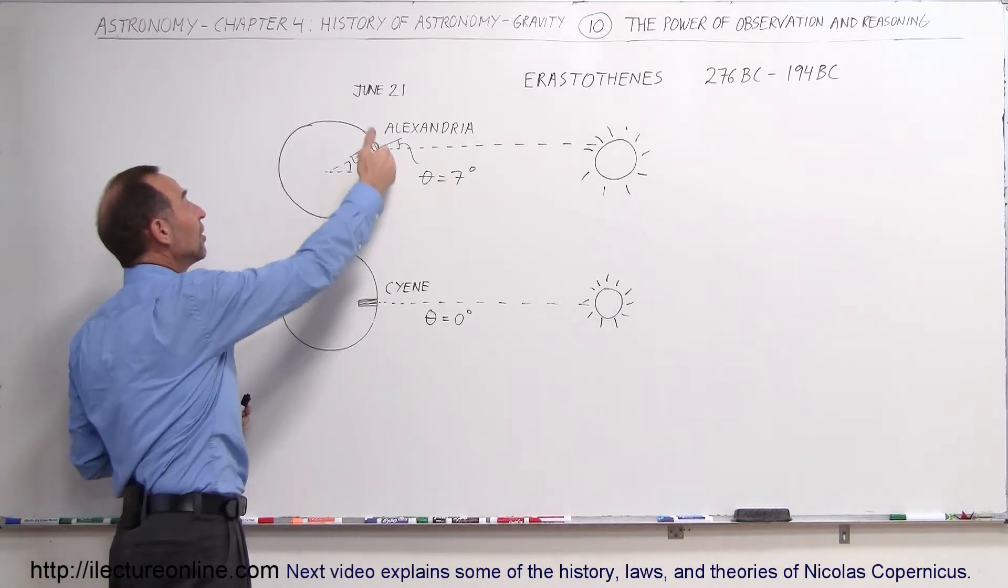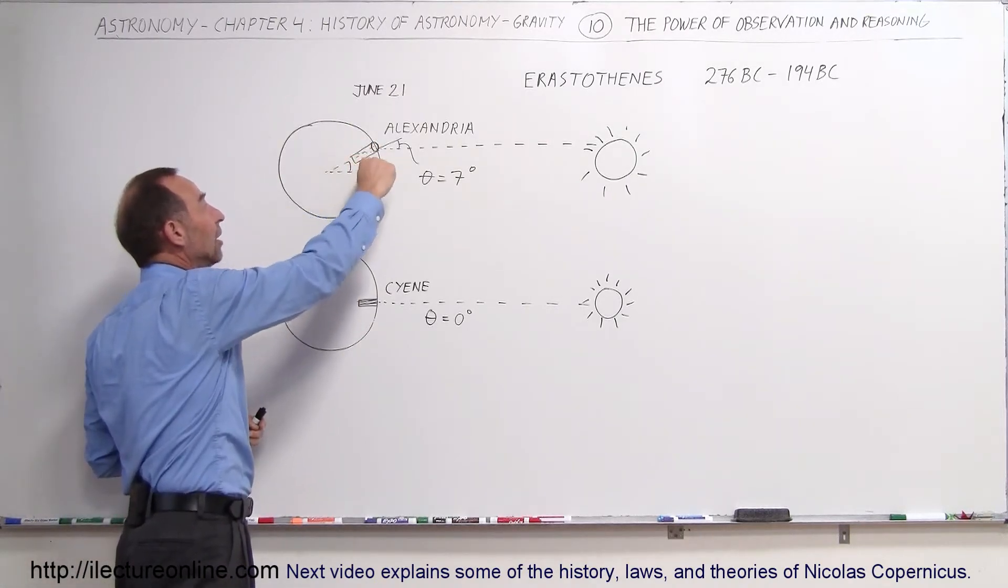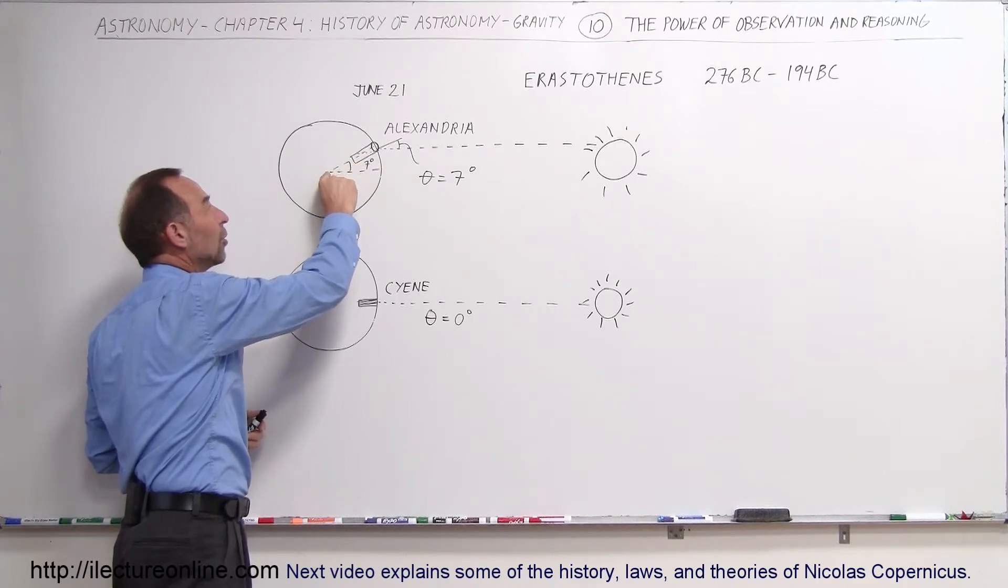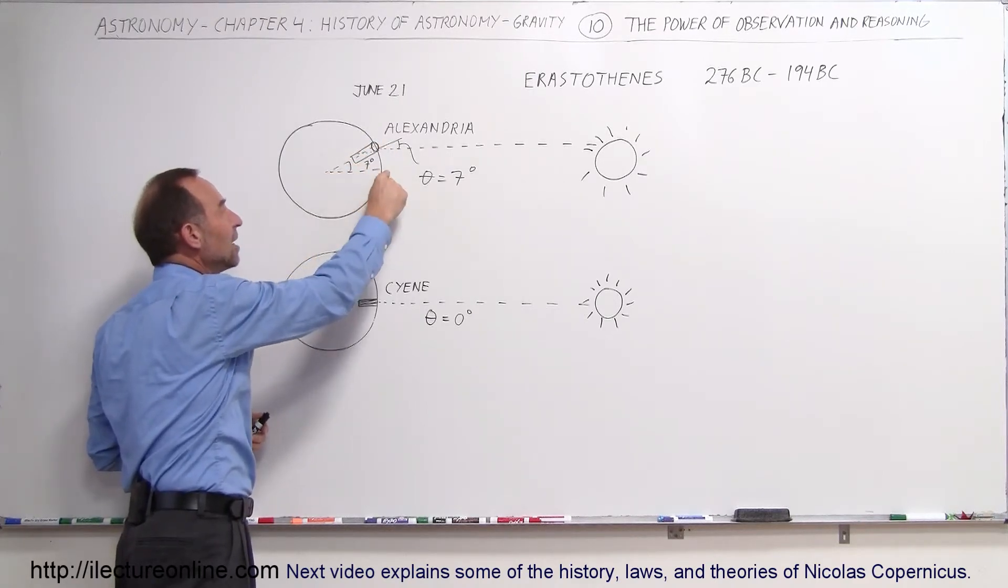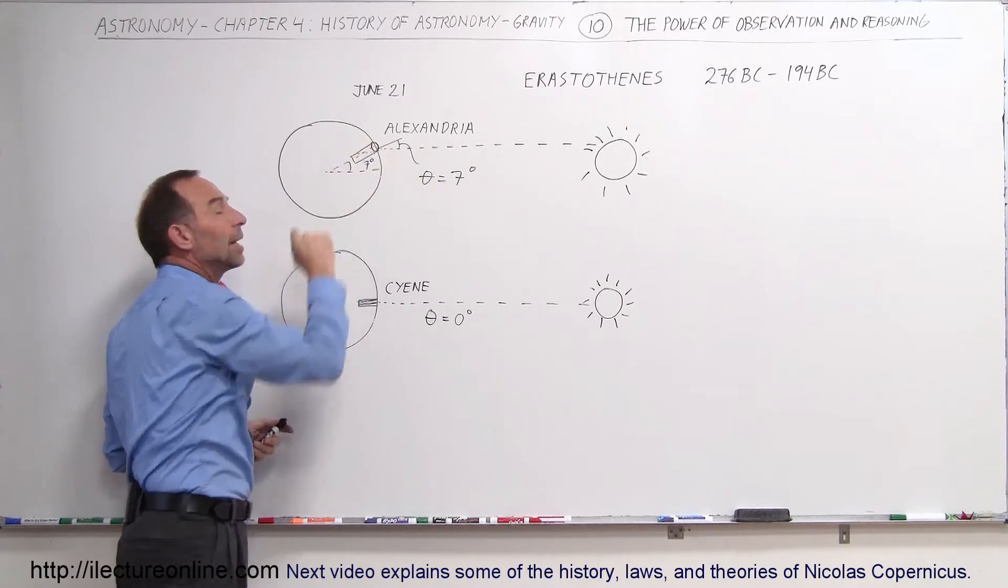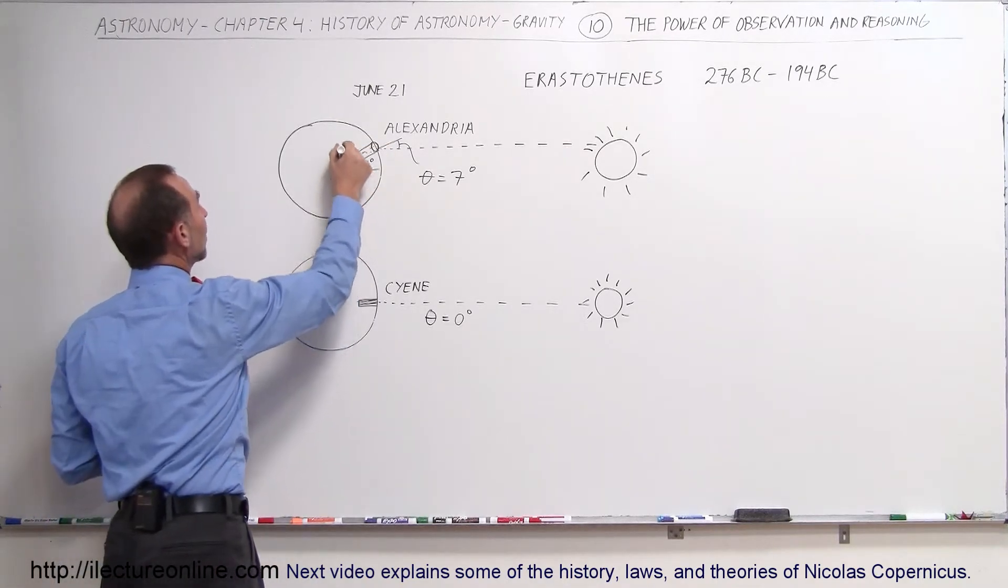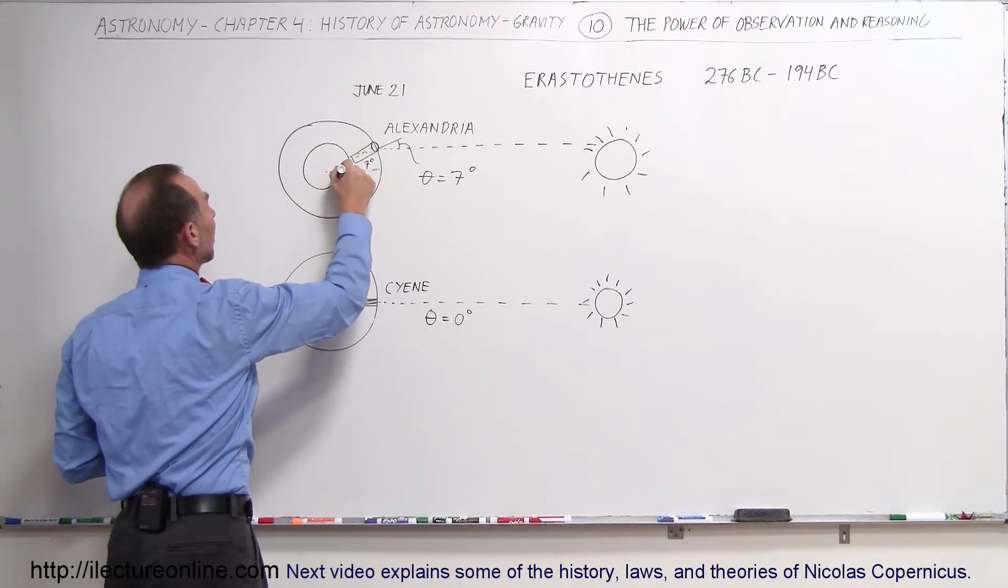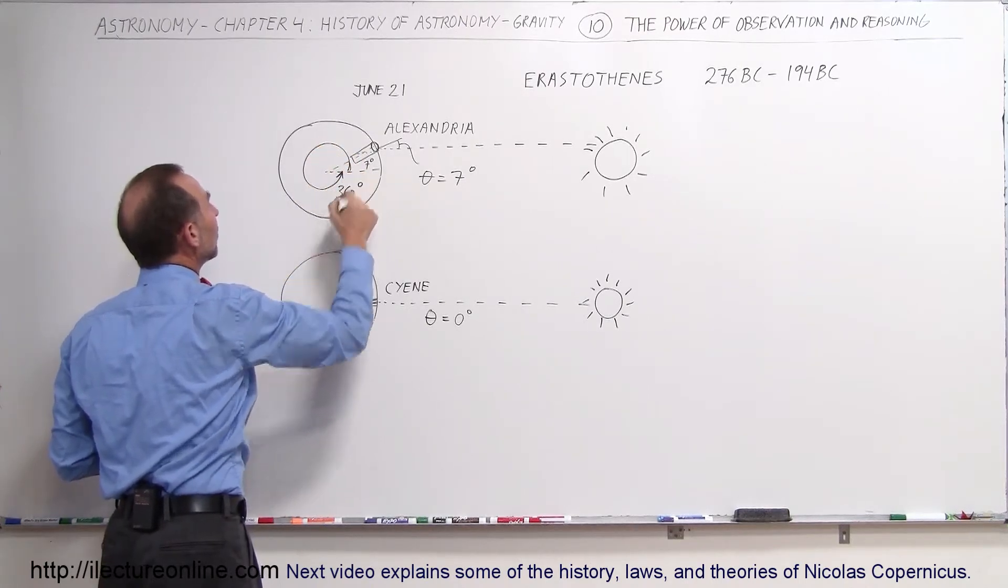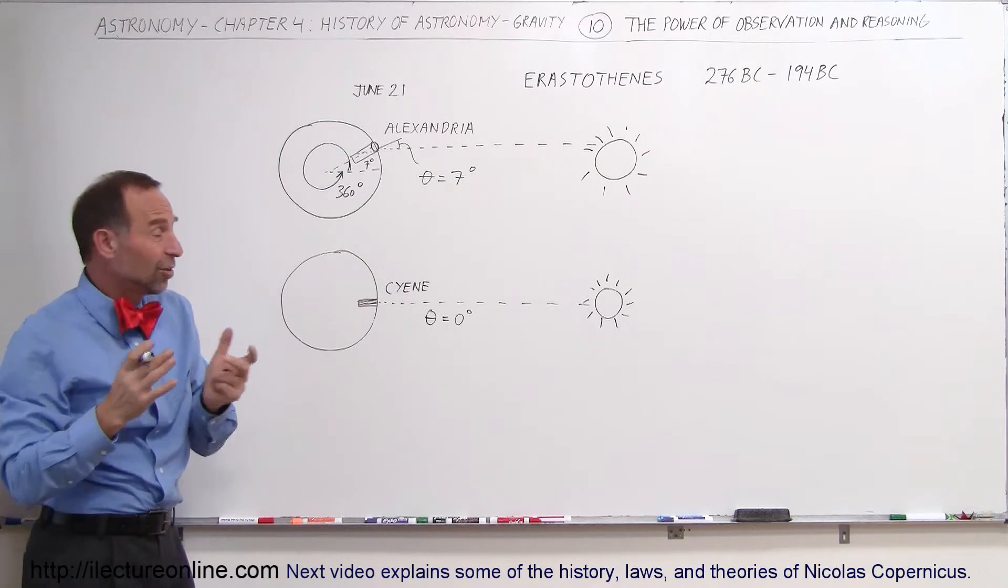Assuming that the Earth was a sphere, he then surmised that the angle, when you draw an angle from the center of the Earth to Alexandria and from the center of the Earth to Syene, that those two lines would make an angle of seven degrees. Also realizing that if you travel all the way around the Earth like this, that would then represent an angle of 360 degrees, and from that he followed a simple reasoning.